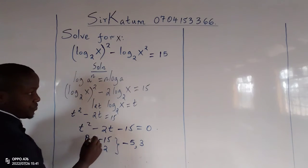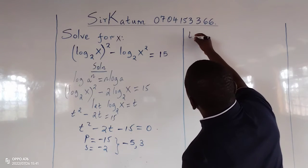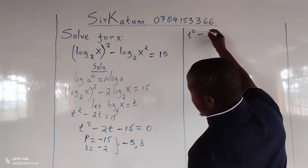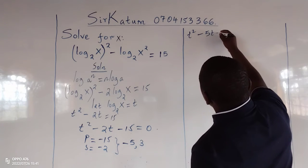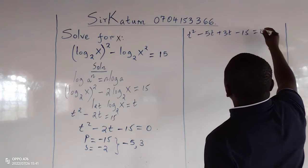Such that we will have this becoming t squared minus 5t plus 3t minus 15 equals 0.